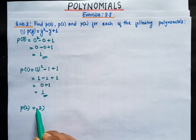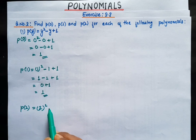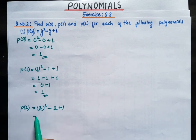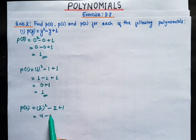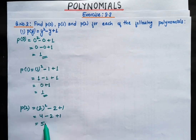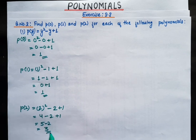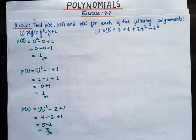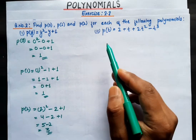Now for P2: put y = 2, giving us 2² - 2 + 1. 2 squared is 4, minus 2 plus 1, so 4 + 1 - 2 equals 3. So P2 = 3.